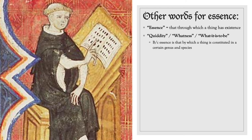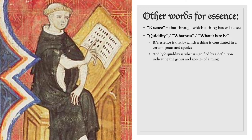All of these phrases — quiddity, whatness, or 'what it is to be' — signify essence, because essence is that by which a thing is constituted in a certain genus and species, and because quiddity is what is signified by a definition indicating the genus and species of the thing. In other words, when we want to define a thing, we're asking what the thing is — we're asking for its whatness or quiddity — but that in virtue of which we're able to answer the question 'what a thing is' is the essence. Thus, quiddity, whatness, and essence all signify the same thing.